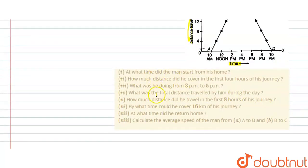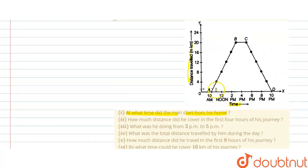Now, there are total 8 questions in this problem. So, at what time did the man start from his home? We can say that the first part of the question is that the man has started his journey at 10 AM.